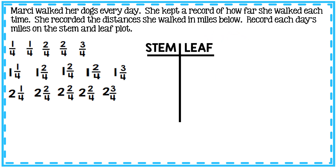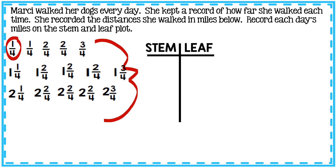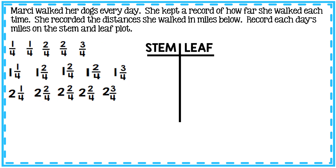Let's get started and read the question: Marcy walked her dogs every day. She kept a record of how far she walked each time, recording the distances in miles. We need to record each day's miles on the stem and leaf plot. Here are Marcy's miles — on one day she walked one-fourth of a mile, another day one and three-fourths, another two and two-fourths.